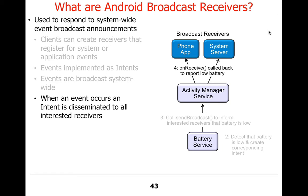There may be other things in the system that also care about this. The system service might want to know about it because maybe it's going to start scaling back on the amount of memory used, shut down unneeded applications, or make the screen go dark faster to conserve power. The battery service doesn't know what the various parties are going to do about it — it just knows the battery is getting low. That's why this ability to broadcast is very useful.